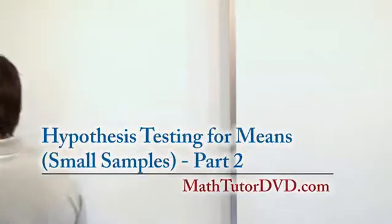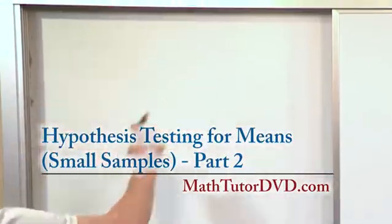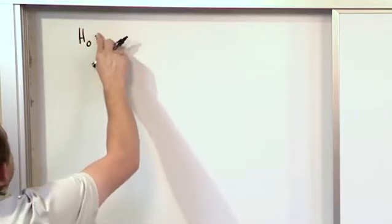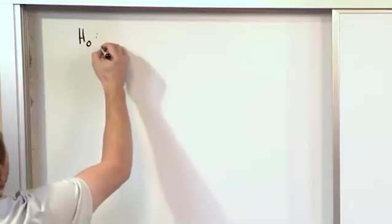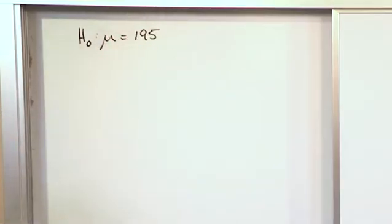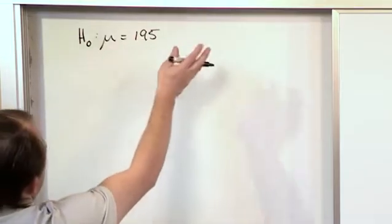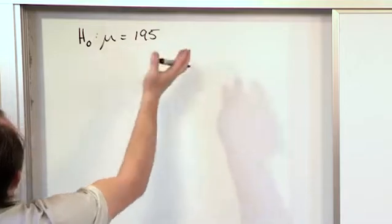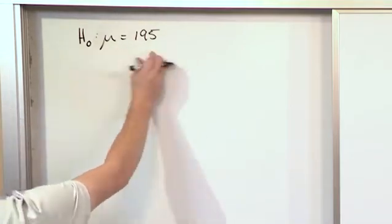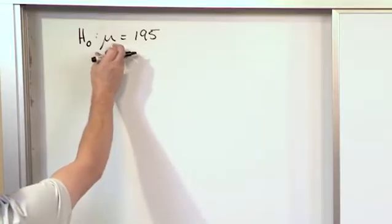We're going to give you the null and alternate hypothesis, give you all the information, and figure out if we reject this null hypothesis or not. Let's say the null hypothesis is that the mean is 195. This could be the length of cars coming off an assembly line in centimeters or feet, or for an 18-wheeler. It's the length, width, or mass of something—some physical number where this is the mean.